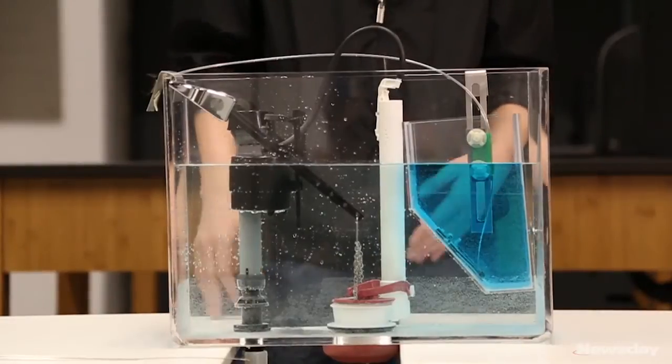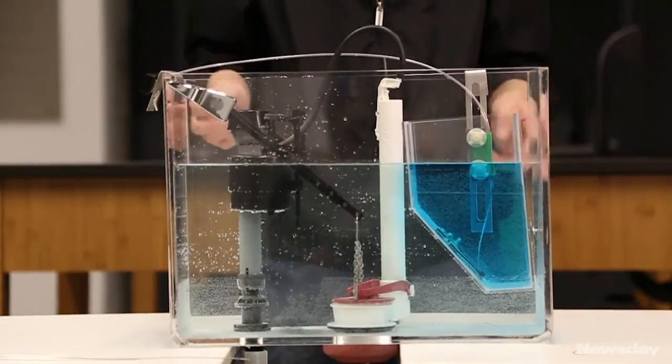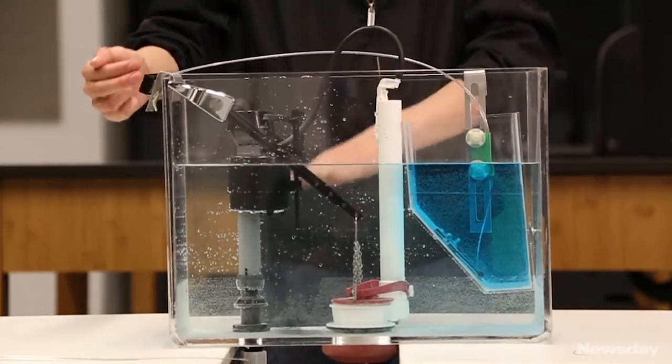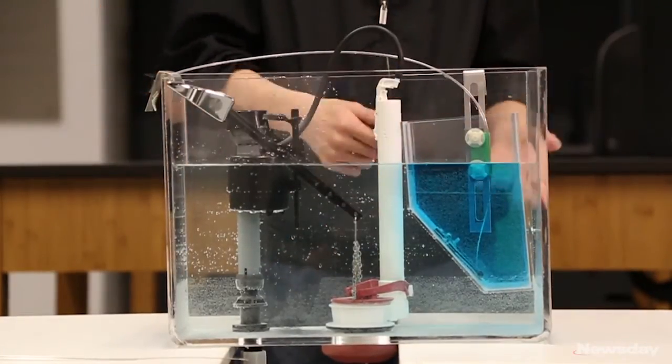When the valve is closed, you are in the half-flush position such that when the user flushes the toilet, only the water from the tank will drain while the water in the container will remain.